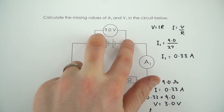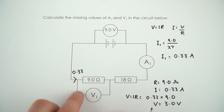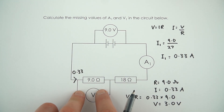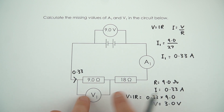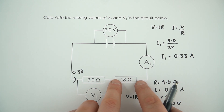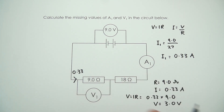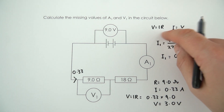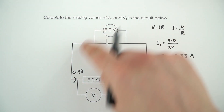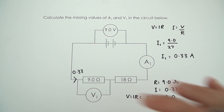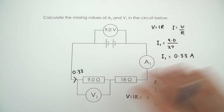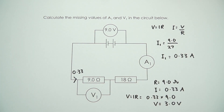So we've got 9 volts here, we have 3 volts over the 9 ohm resistor, and that means there would also be 6 volts left over the bigger 18 ohm resistor. All I'm doing here is applying the equation V equals I times R to either the whole circuit or individual bits of the circuit, and that allows you to work out all of these missing values.